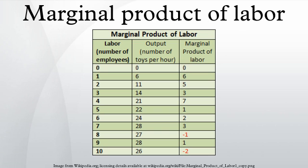Eventually the MPL reaches its maximum value at the point of diminishing returns. Beyond this point MPL will decrease. However, at the point of diminishing returns the MPL is still above the APL, and APL will continue to increase until MPL equals APL. When MPL is below APL, APL will decrease.